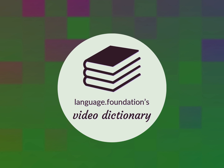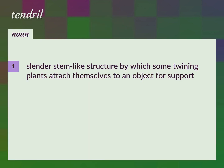Language.Foundation's Video Dictionary, helping you achieve understanding. Tendril: a slender stem-like structure by which some twining plants attach themselves to an object for support.